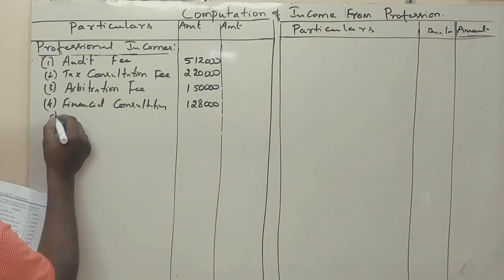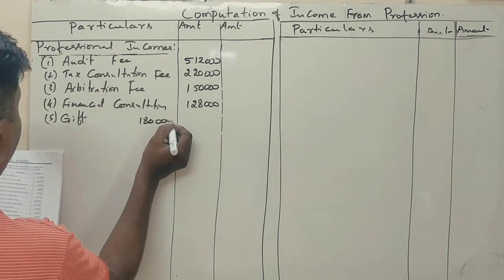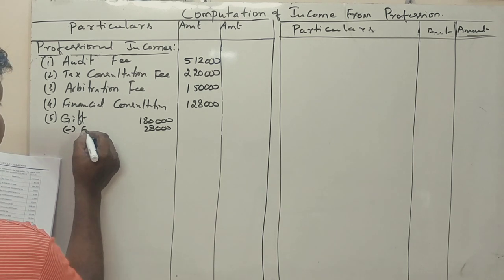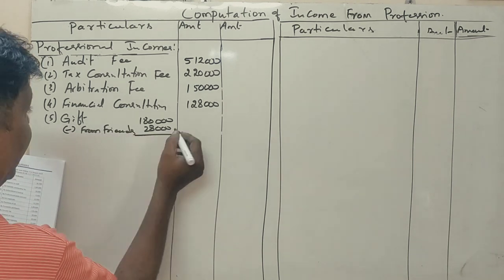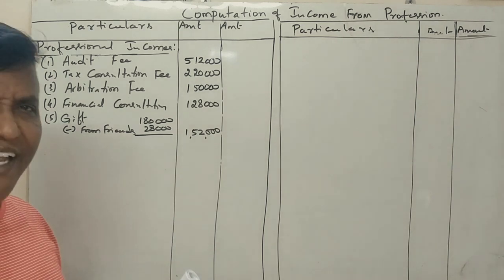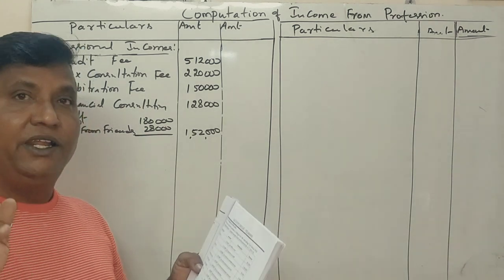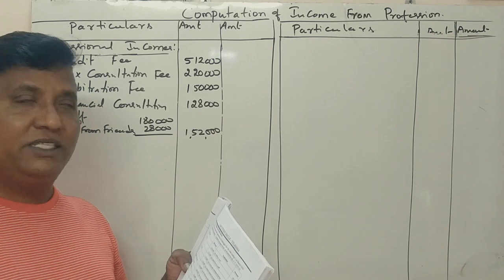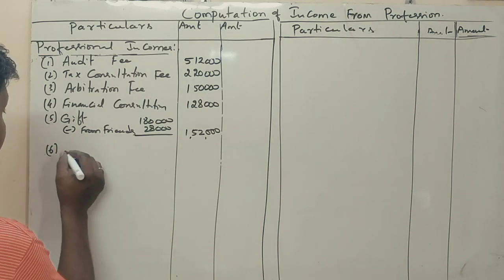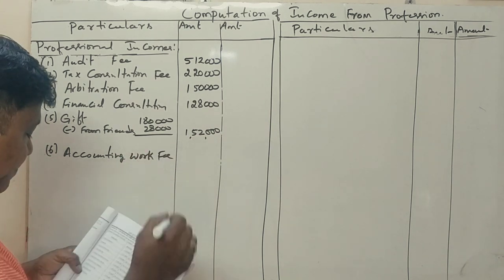Presents from clients or gift from clients: total 1,80,000. From friends — 28,000 is personal, so we deduct that. Net gift from clients: 1,52,000. Rent from house property is chargeable under the head Income from House Property, not under profession. Dividend from X company is chargeable under Other Sources, not under profession. Accounting work fees: 50,000.